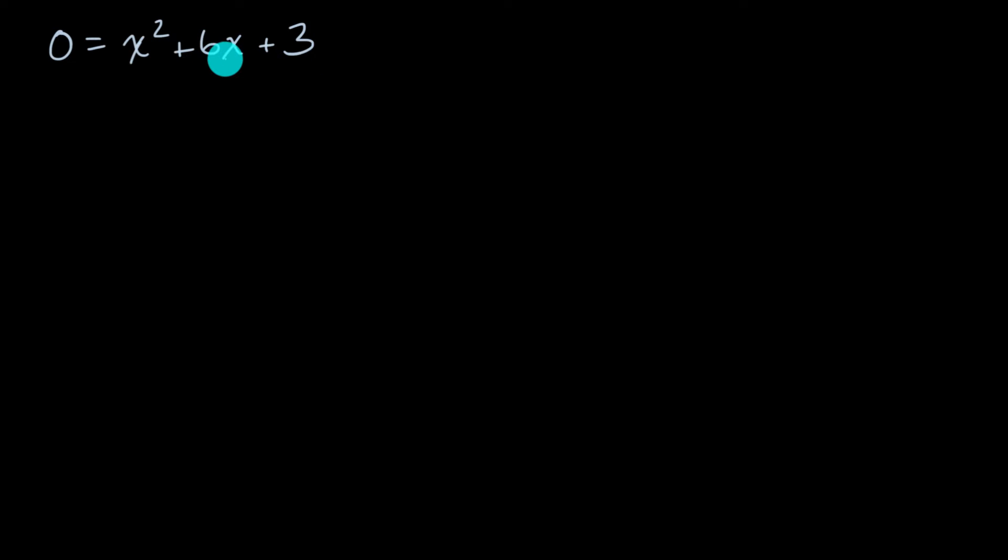So let's see, can I think of two numbers that when I add them, I get six, and when I take their product, I get positive three? Well, if I'm thinking just in terms of integers, three is a prime number. It only has two factors, one and three. And let's see, one plus three is not equal to six. So it doesn't look like factoring is going to help me much.